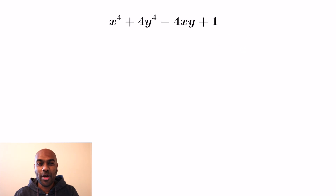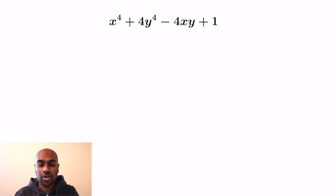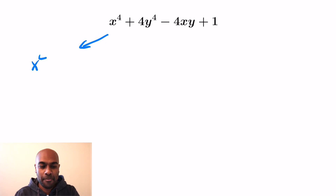Take a look at this polynomial right over here. It's a polynomial in two variables and it has this negative sign in the middle. But it turns out this polynomial is non-negative no matter what values of x and y you plug in. Let's take a look at why.